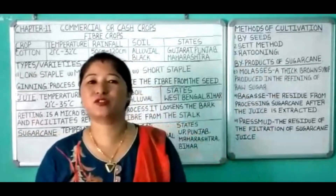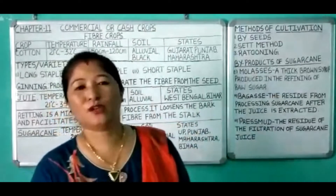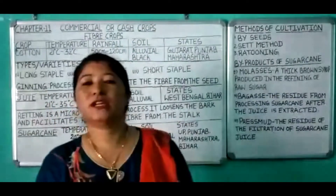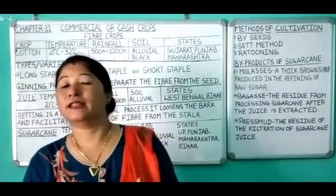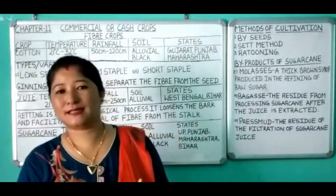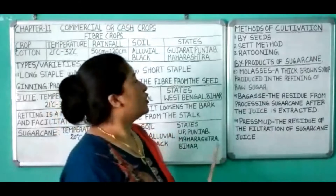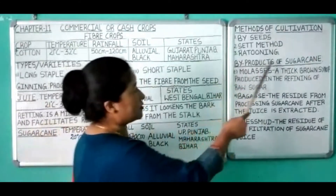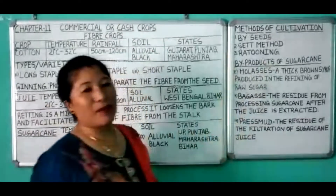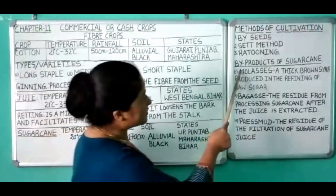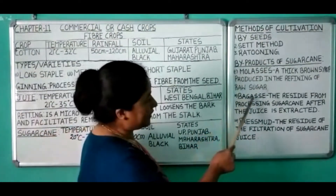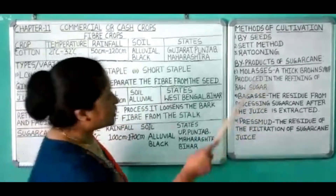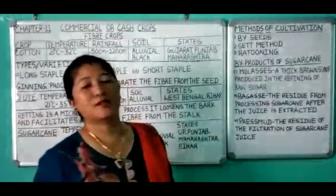Now let us see the byproducts. The main products we get from sugarcane are gul, kansari, and sugar. Along with these products, we also have byproducts. There are three byproducts: one is molasses, second is bagasse, and third is press mud.